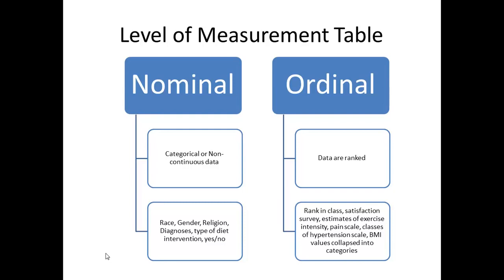In our earlier ketogenic diet example, a nominal outcome measure might be a single question: did your child have less seizures while on the ketogenic diet? A yes-no answer won't tell us much, even if there are more yeses than noes, because we don't really know if they had a 2% reduction in seizures or a 92% reduction. All we know is that parents either said yes or no. So nominal level data don't really tell us a lot.